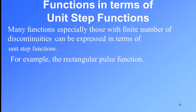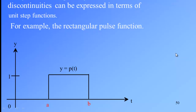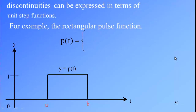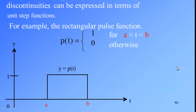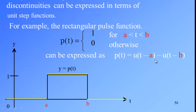For example, the rectangular pulse function, where p(t) is equal to 0 for t less than a and t greater than b, and is 1 for t between a and b. The graph of this function is 1 between a and b, 0 for t less than a, and 0 for t greater than b. This function p(t) can be expressed as a combination of unit step functions: p(t) = u(t−a) − u(t−b).